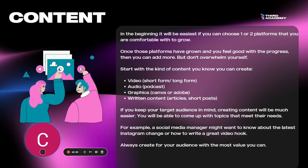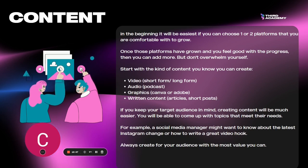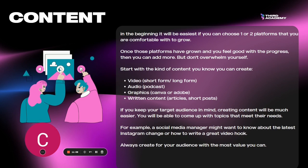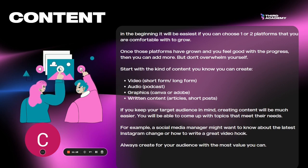Now let's get into scheduling your content. In the beginning, it'll be easiest to choose one or two platforms you're comfortable with to grow. Once those have grown and you feel good with progress, then you can add more — don't overwhelm yourself. Start with the kind of content you know you can create: whether that's video using short or long form (if you're on a phone, you can use the VideoLeap app to edit videos), audio podcasting (using the Anchor app to create podcasts directly from your phone), or graphics using Canva or Adobe.